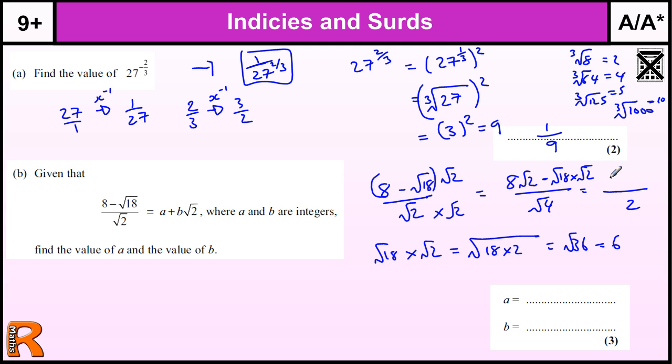So we end up with the square root of 36, which we should know is 6. So we end up with 8 root 2, minus 6. Then we just divide the 2 into the top. We end up with 8 divided by 2, which is 4 root 2. So we're going to halve them, we end up with 4 root 2s, and a half of 6 is 3.